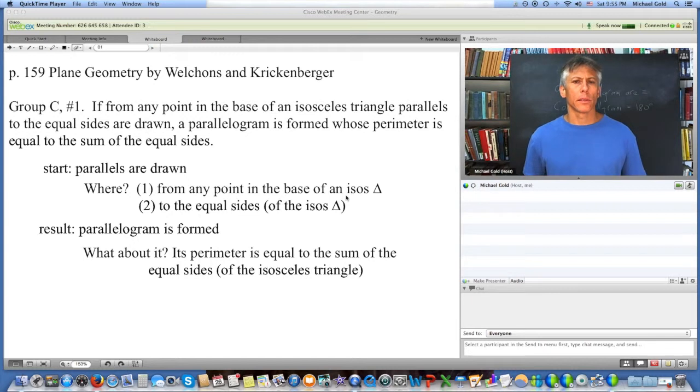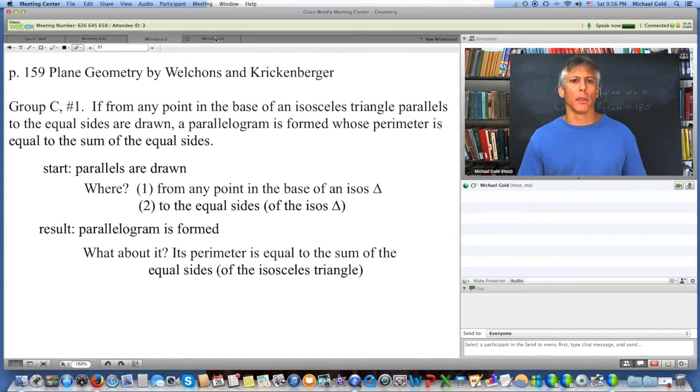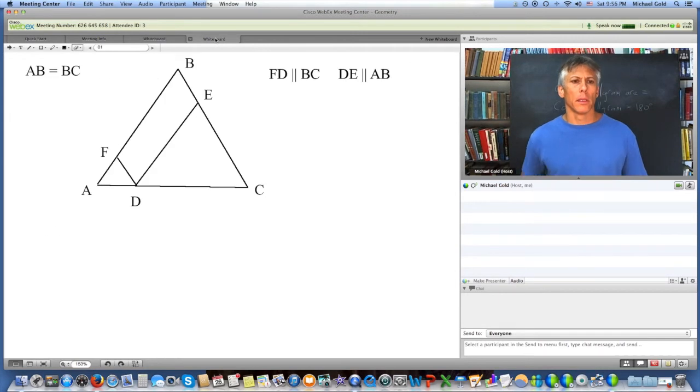Now the parallels are drawn from any point in the base of an isosceles triangle, and they're drawn to the equal sides. From is the starting point, to is the ending point. So we get something like this. We have an isosceles triangle, ABC, where AB equals BC. Okay, remember that's what it said. We had an isosceles triangle. Now from any point, like D, any point in the base of the isosceles triangle, AC is the base, we draw two lines, and the lines are parallel to AB and BC,